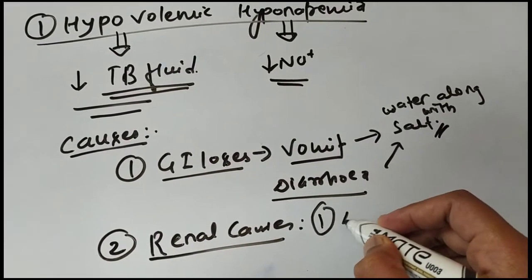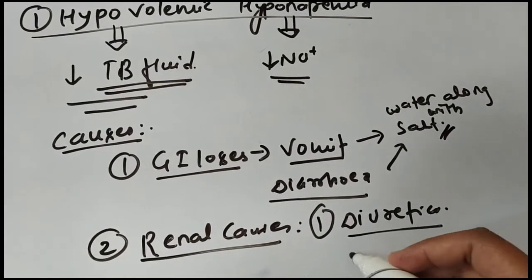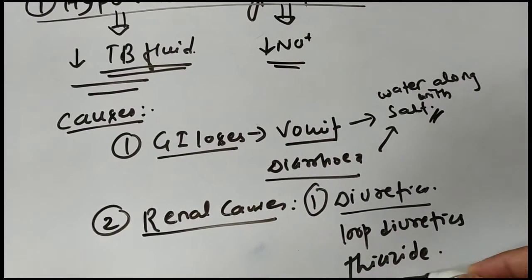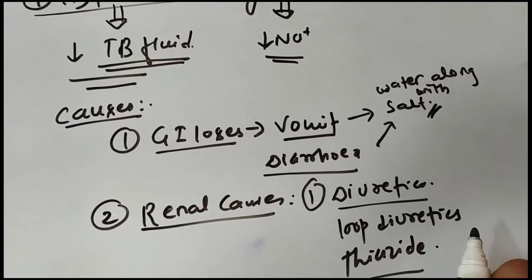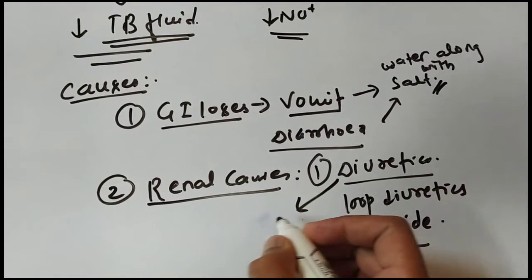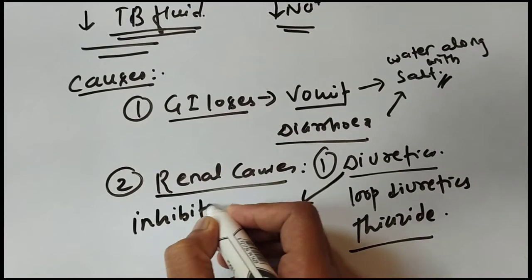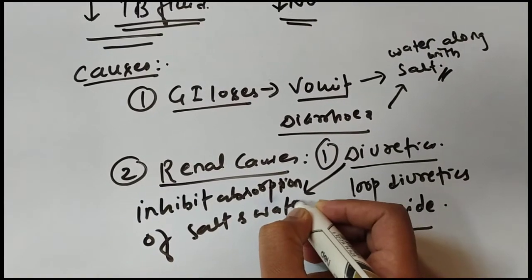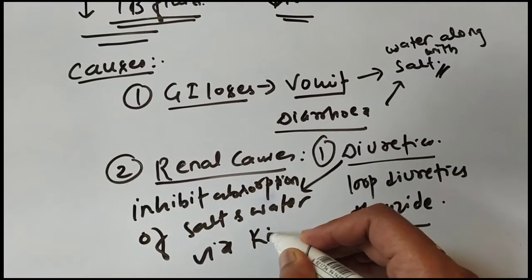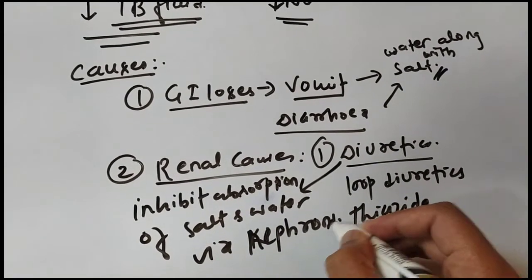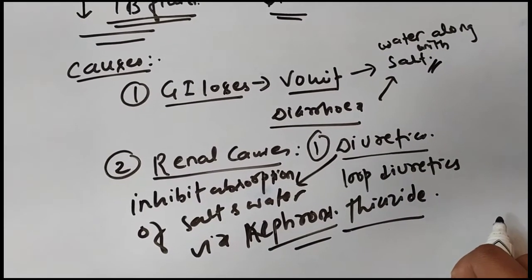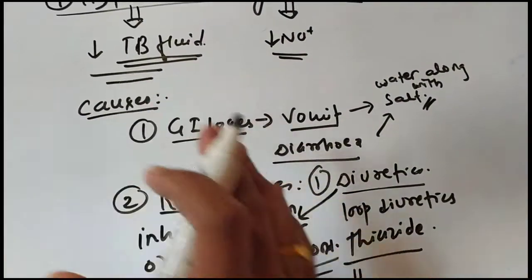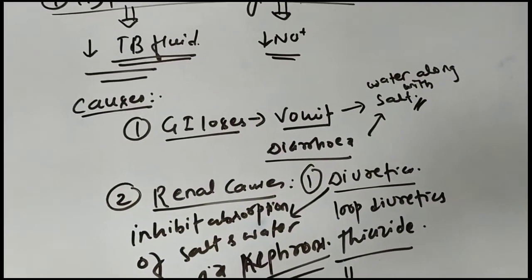The second cause is a renal cause. For example, if you are using diuretics — loop diuretics or thiazide diuretics — these diuretics inhibit the absorption of salt and water via the nephron. Due to this, there will be loss of water as well as salt in the urine, causing decreased body fluid and decreased sodium levels.